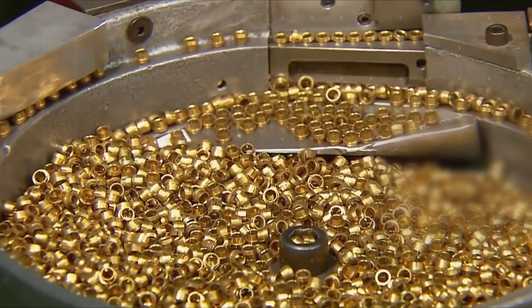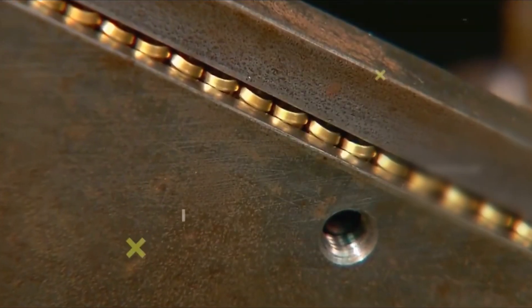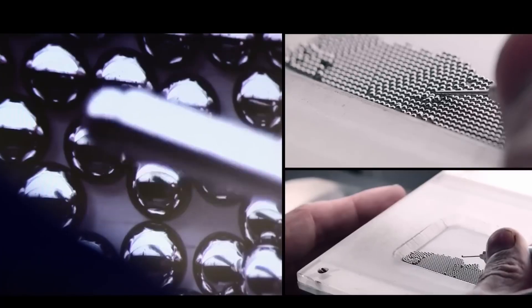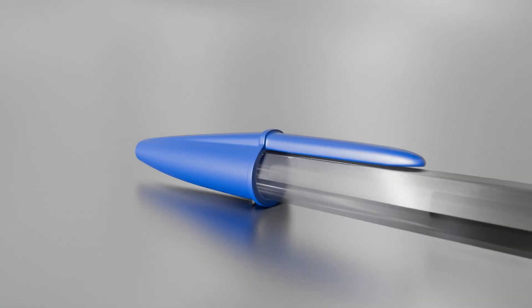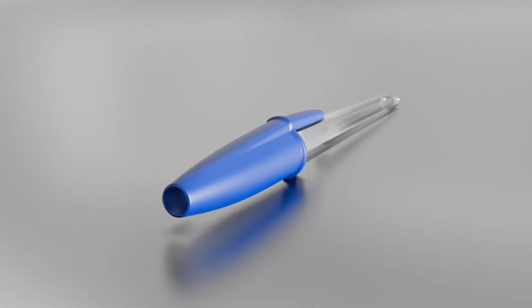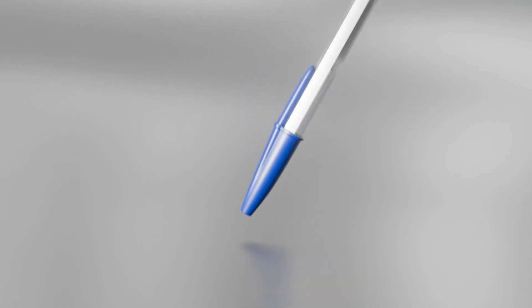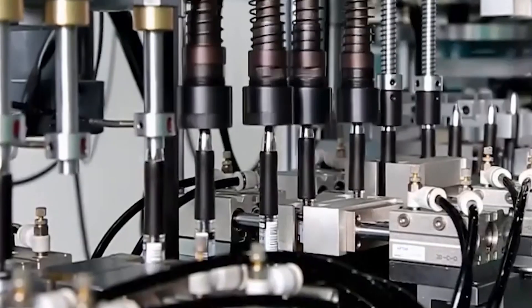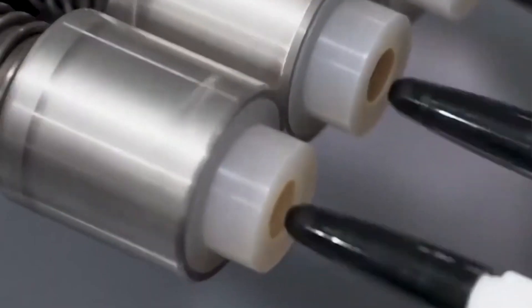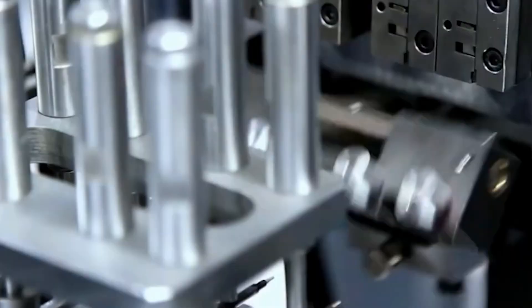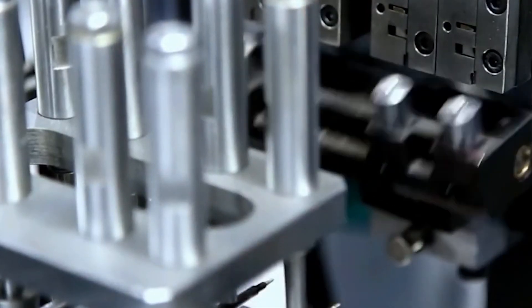The process of making the metal parts starts after the plastic parts like the barrel and cap have been shaped. Things like the clip, the tiny ball in the tip, and sometimes even parts of the pen's bodies are subject to this. These parts are very important because they keep the pen from breaking and make sure it clips tightly to your notebook or pocket. Metal strips, usually brass, stainless steel, or aluminum, because they are strong and easy to shape, are used to start the process.